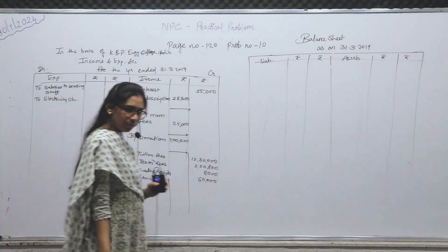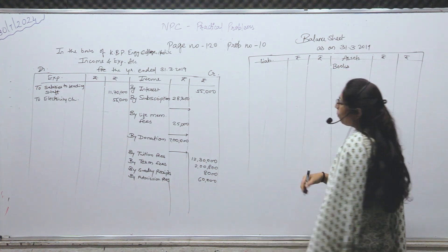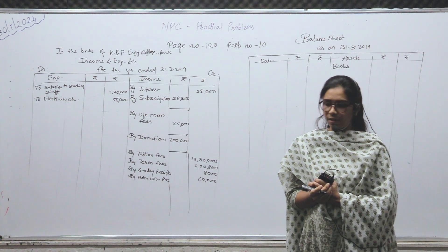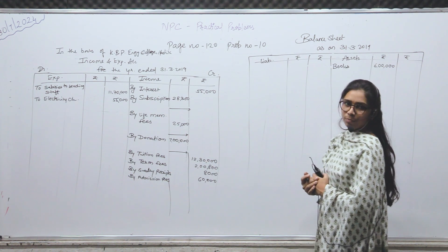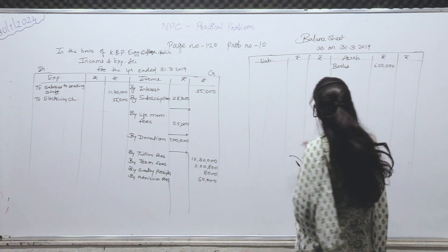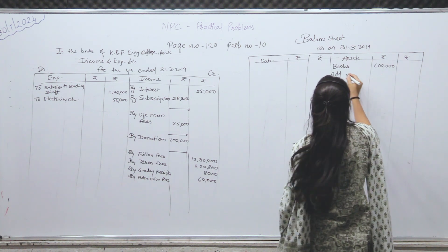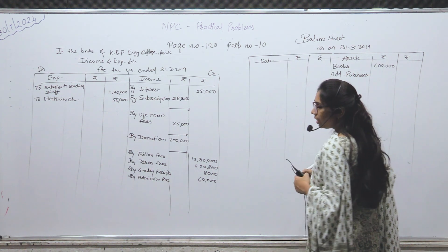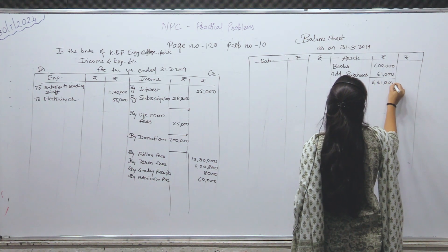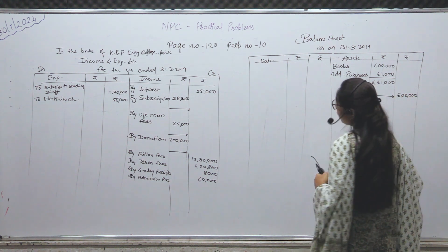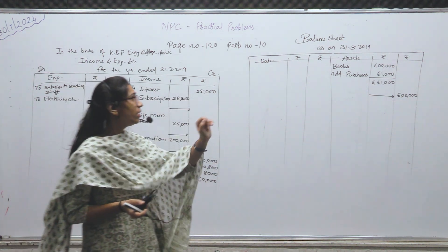Books की treatment बताई — asset में जाओ। Books का opening balance लिखना है जो additional information में दे रखा है — 6,00,000। उसमें recent payment में जो books दिये वो purchase करके add। शुरू में balance था, during the year नए books purchase किये — add purchases — 61,000 के purchase किये। Total books हो गए 6,61,000। लेकिन outer column में 31st March 2019 का balance देखोगे — additional information में — 6,00,000।